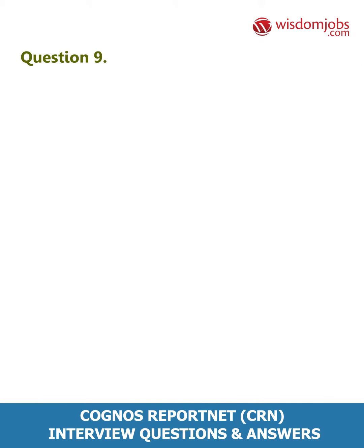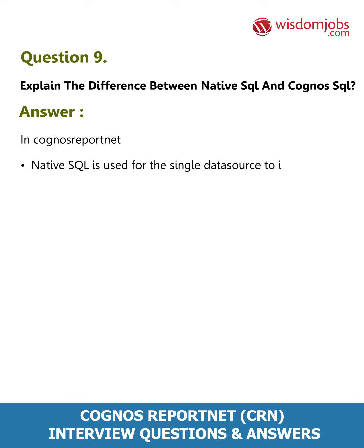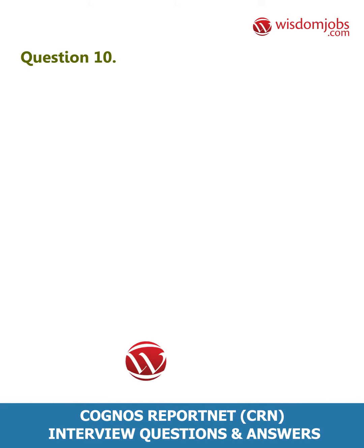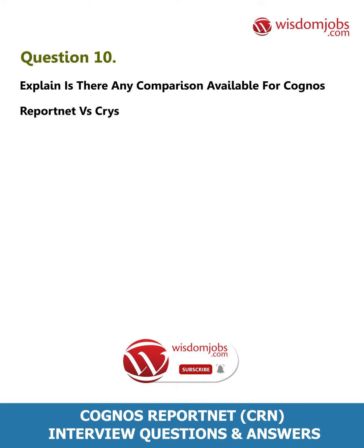Question 9: Explain the difference between Native SQL and Cognos SQL. Answer: In Cognos ReportNet, Native SQL is used for a single data source to import metadata, while Cognos SQL is used for multiple data sources to import metadata.